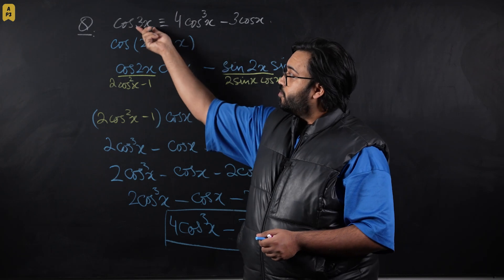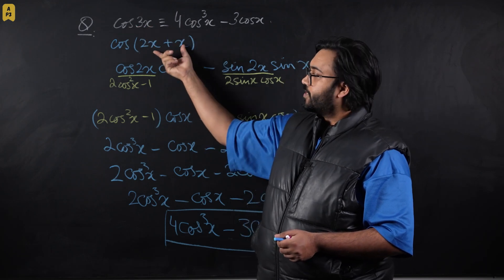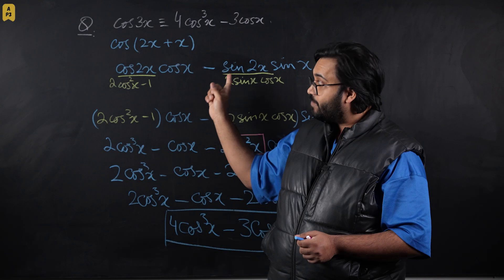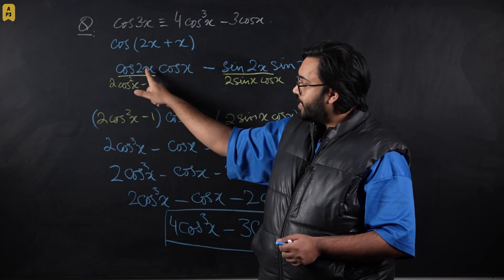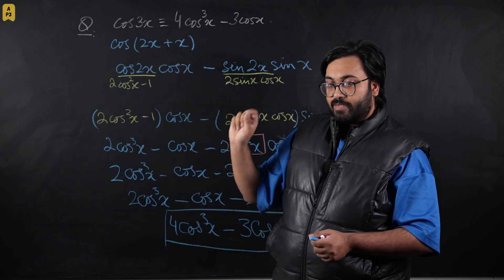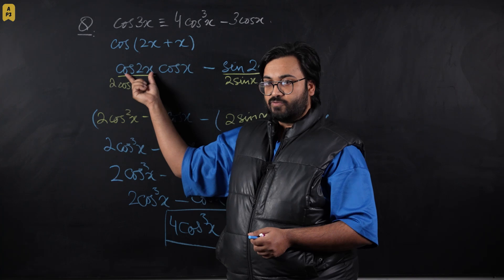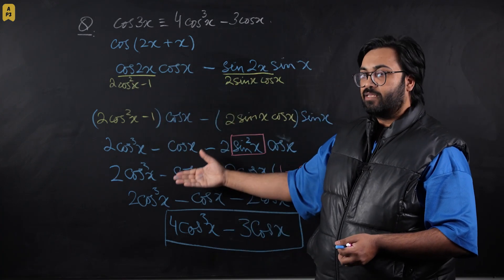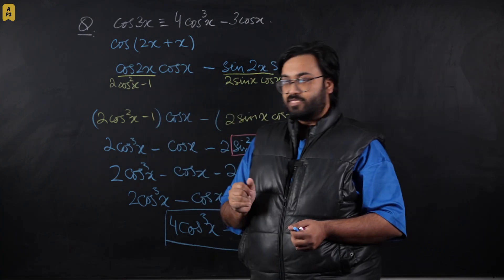Then apply double angle identities on the terms with angle 2x and you'll fix the entire angle. The rest of it is just algebraic manipulation and nothing further.